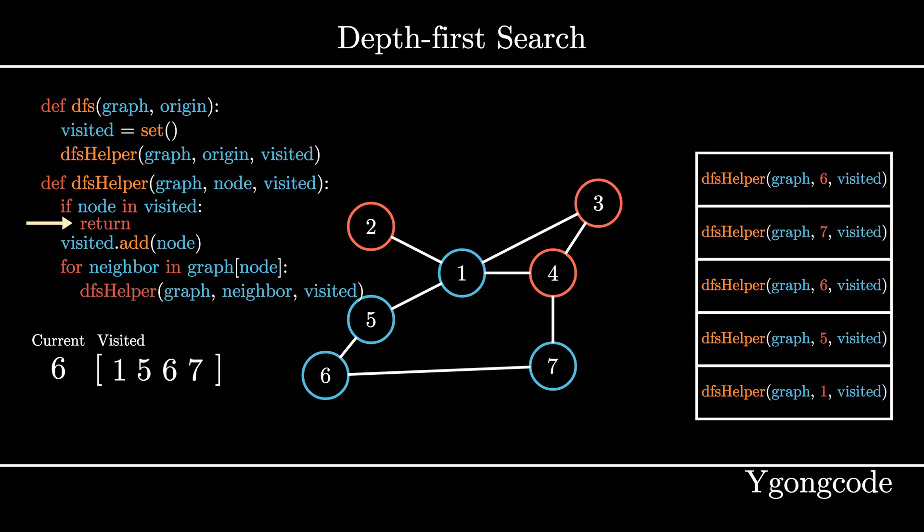Since node 6 has been visited, we return, pop it off the stack, and execute from where we left off in dfsHelper 7, which is in the for loop.